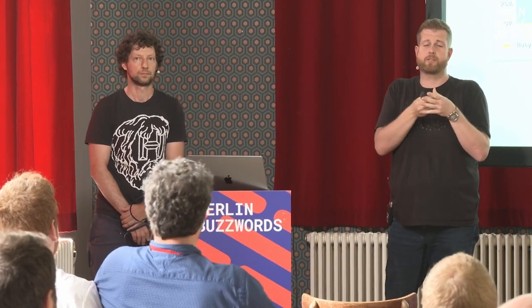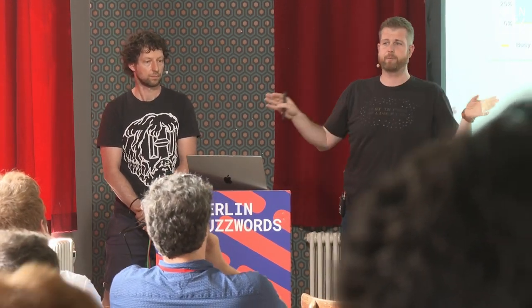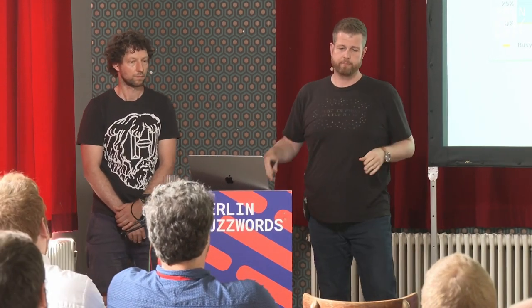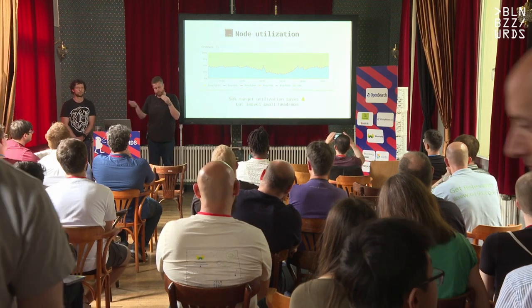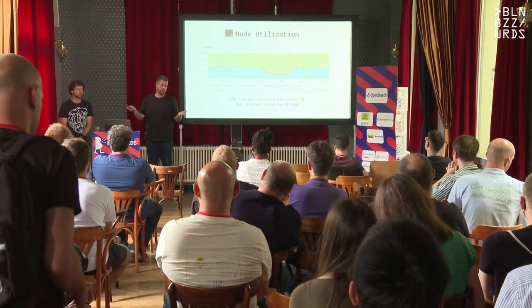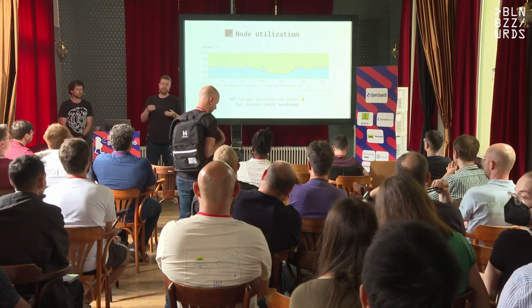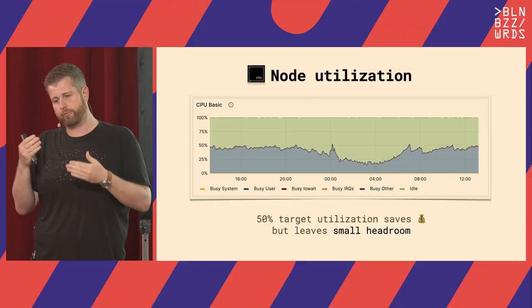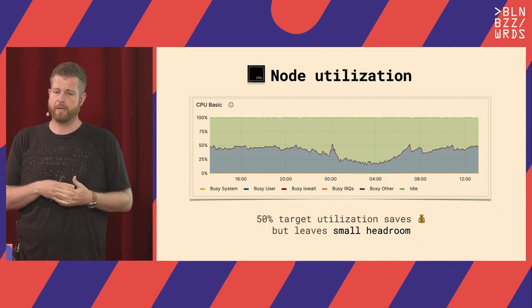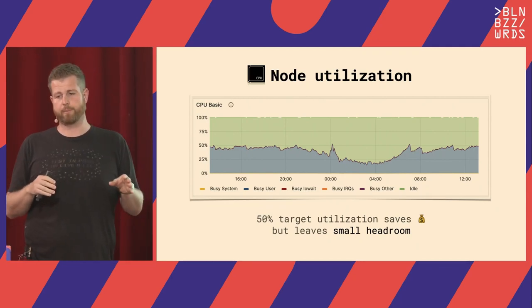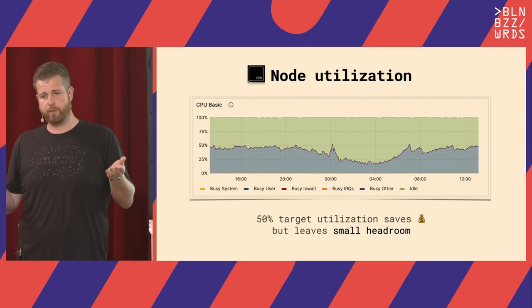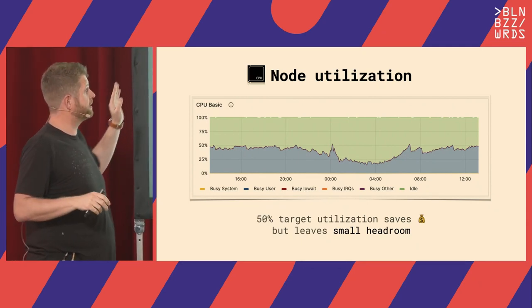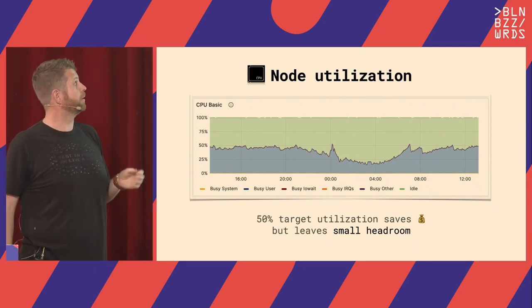Everything we talk about is rooted in an AWS cost reduction project. We were driving a large Solr e-commerce cluster, and we went ahead on reducing costs. During that, we fixed a lot of issues in Solr, submitted pull requests, and fixed some internal bugs. One key outcome: we were able to raise node utilization on the CPU level from 25% to 50% — that's the average 24-hour node utilization on our Solr cluster.